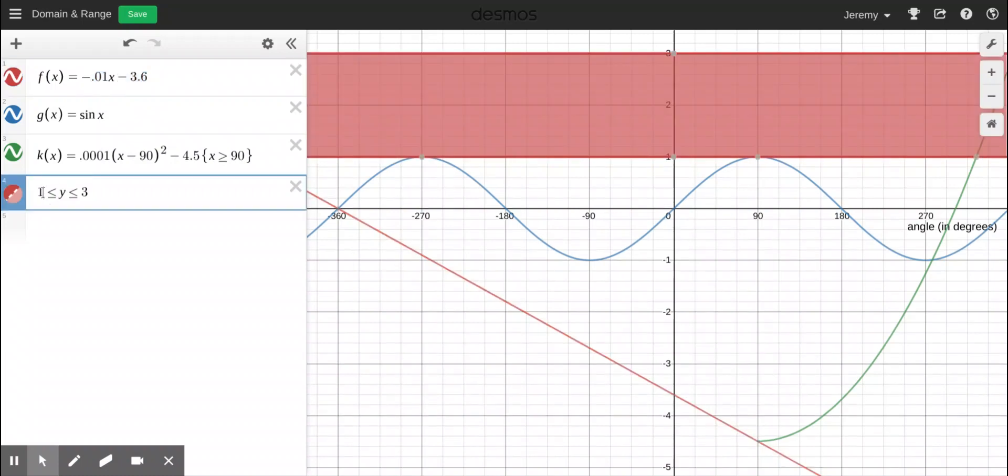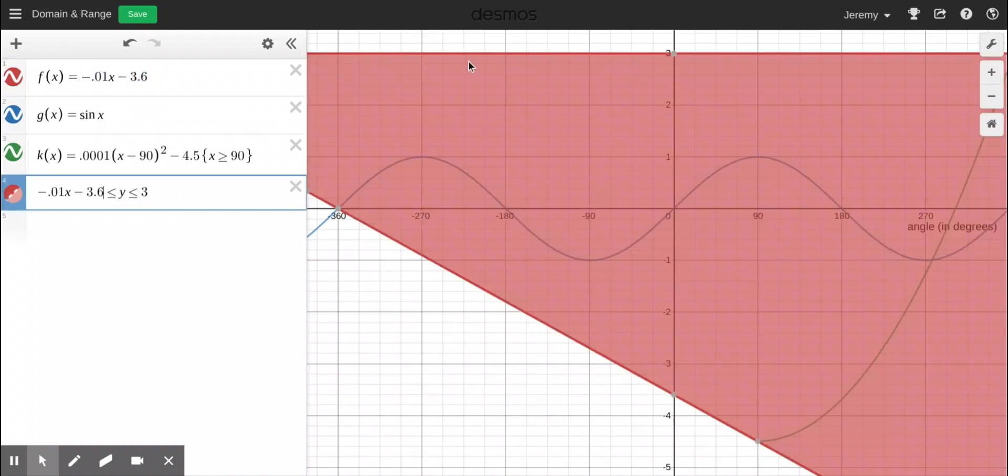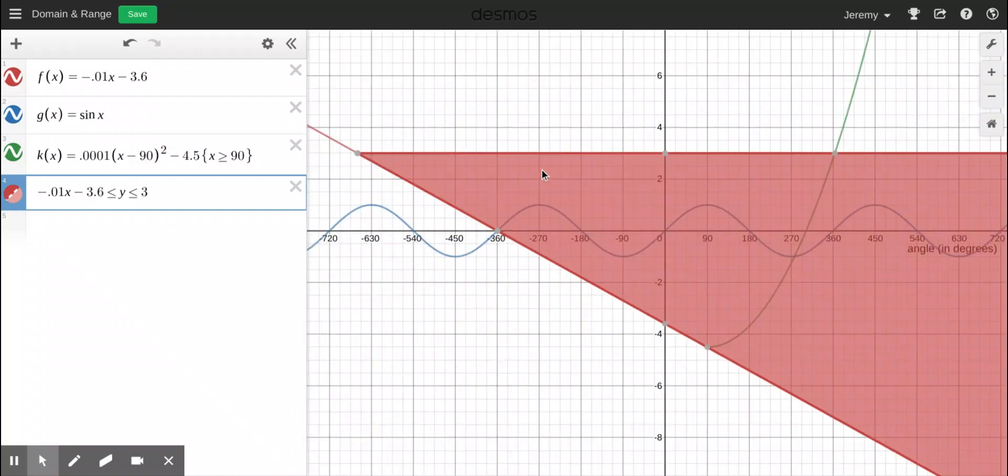And notice now that the graph is shaded anywhere where the y is bigger than this expression from the linear function and smaller than or equal to three. So here's three and here's this linear function. And notice right here, there's nothing to the left because anything to the left would be bigger than this, but greater than three. And it can't be greater than three.